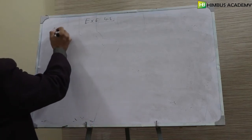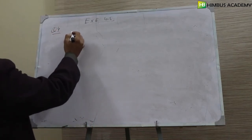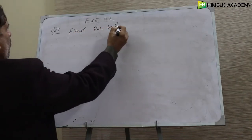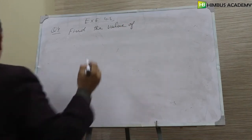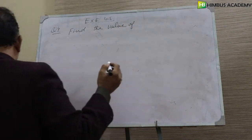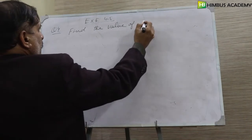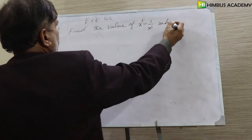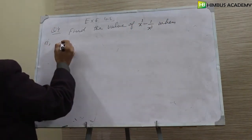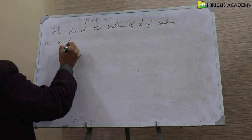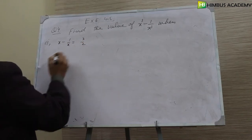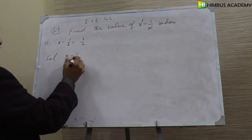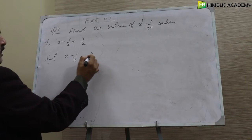Q4. Find the value of x cube minus 1 over x cube. When, number first, x minus 1 over x is equal to 3 over 2.